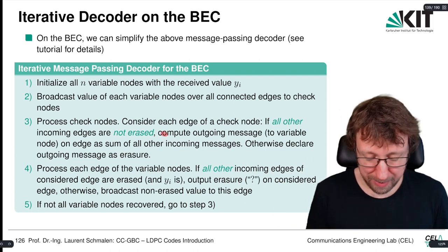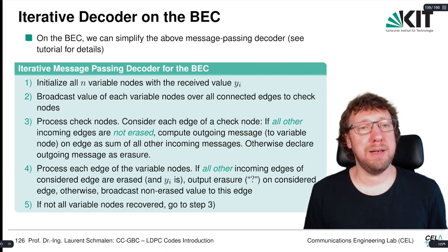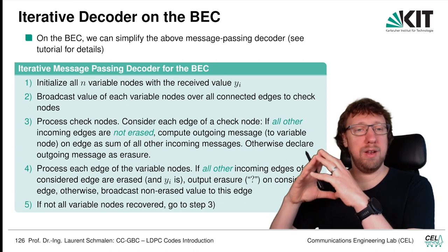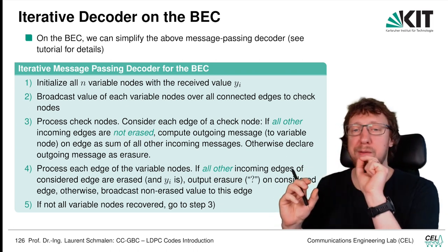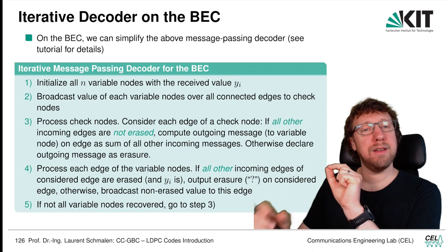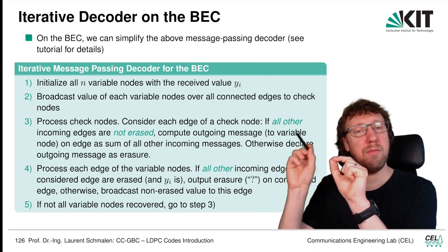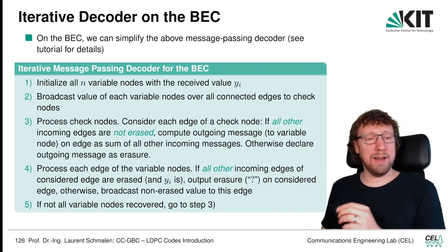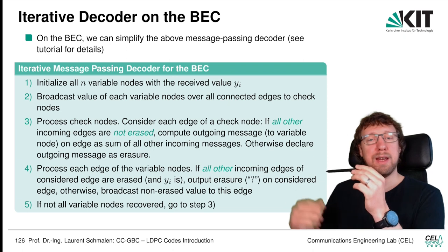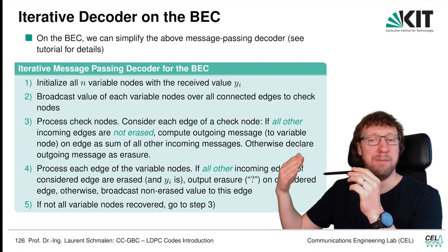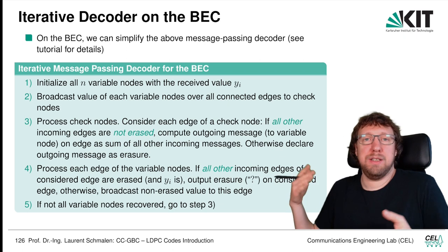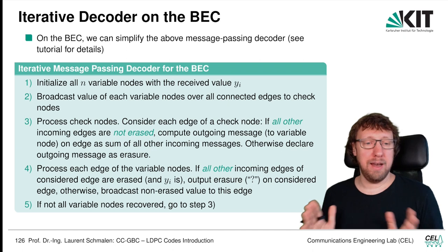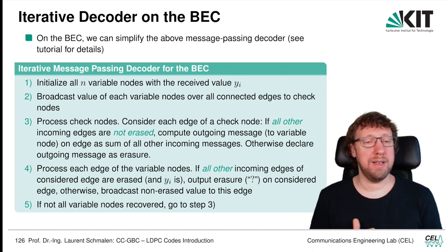The outgoing message is the sum of all incoming messages. Recall the circles for the Hamming code in the initial example — if one value in a circle was erased, we could calculate it as the sum over all the other values. So if all the incoming messages are not erased, we calculate the outgoing message as the sum. If any one of the incoming messages is erased, we cannot say anything and must declare an erasure in the outgoing message.